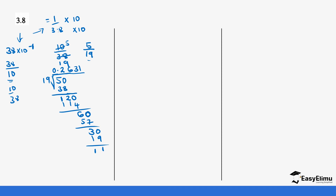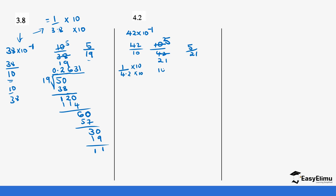Let's look at another example with the decimal value 4.2. You can change it into standard form: 42 times 10 to the power negative 1, which is the same as 42 divided by 10. The reciprocal of 42 over 10 becomes 10 over 42. Dividing both by 2 gives 5 over 21. Alternatively, starting from 1 over 4.2 and multiplying both sides by 10 also gives 10 over 42, which is 5 over 21.